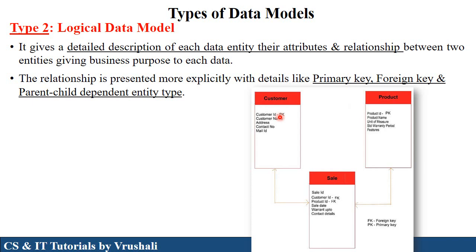The logical model uses primary key and foreign key concepts. Primary key means unique identity — a unique value. Each and every customer has their own ID, that is the primary key. Product also has a unique value, that is product ID, and sale also has its own sale number — that is sale ID. This sale extracts information from the customer and the product, which is why they use customer ID and product ID as primary keys. So it shows the relationship between the tables.